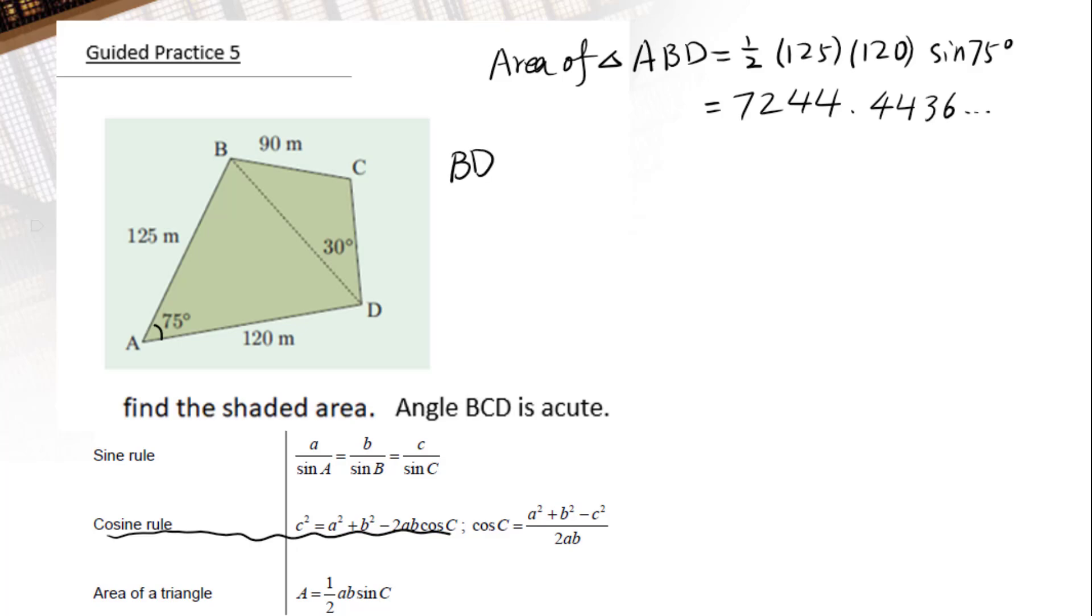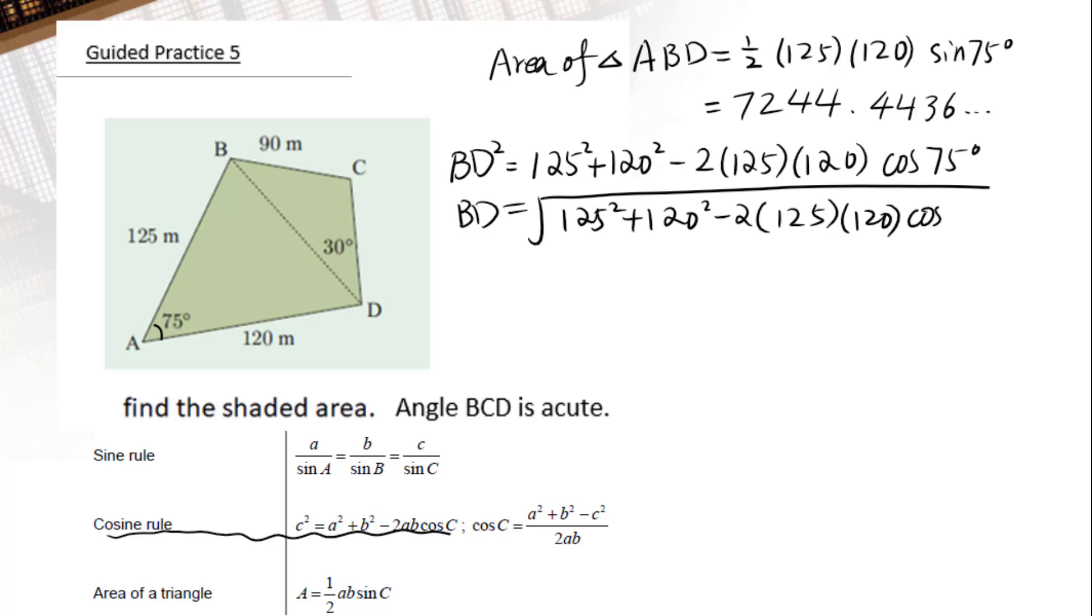BD squared equals 125 squared plus 120 squared minus 2 times 125 times 120 cos 75 degree. Then BD equals square root 125 squared plus 120 squared minus 2 times 125 times 120 cos 75.